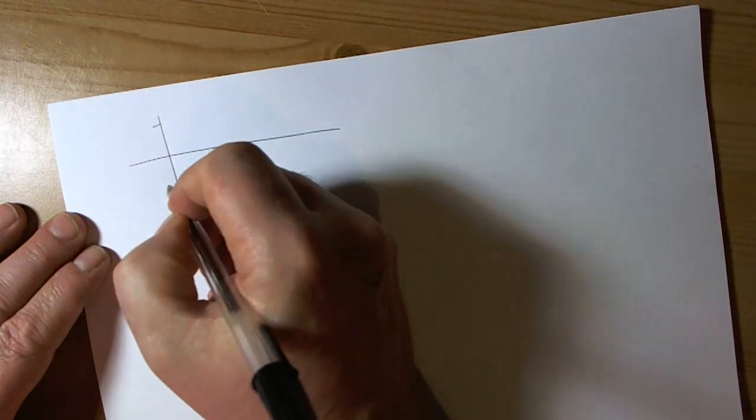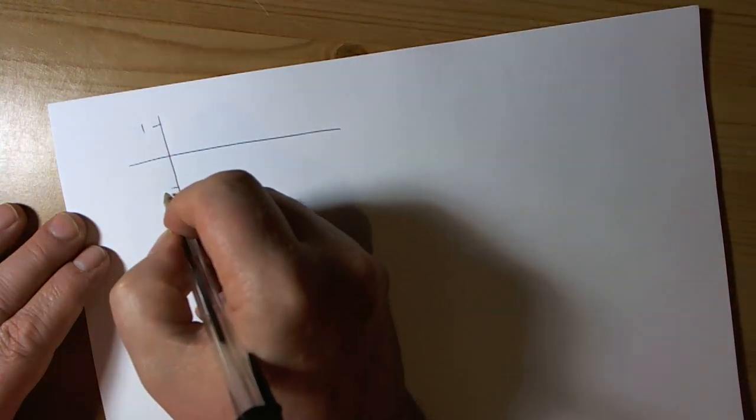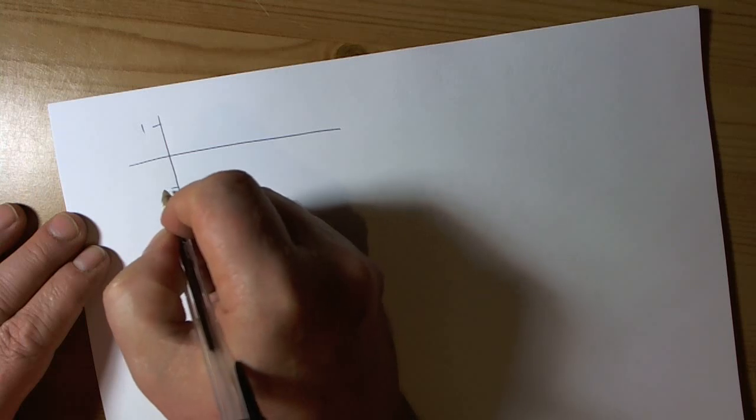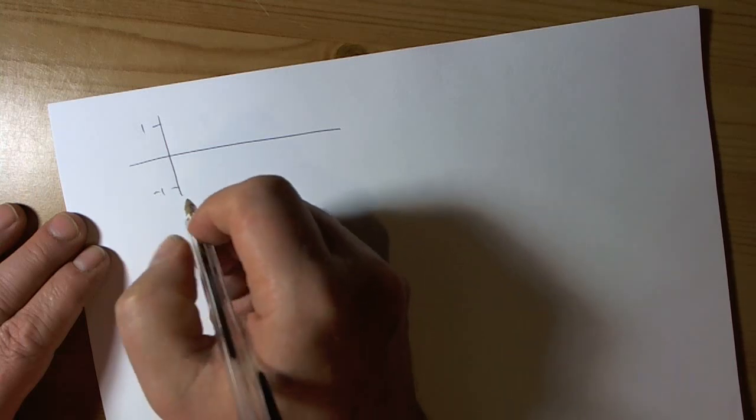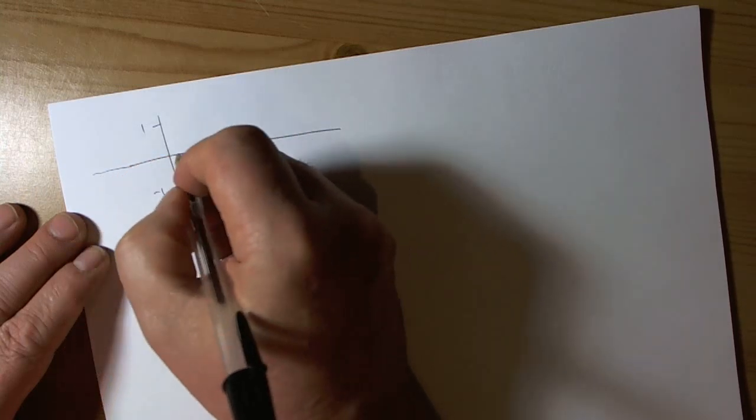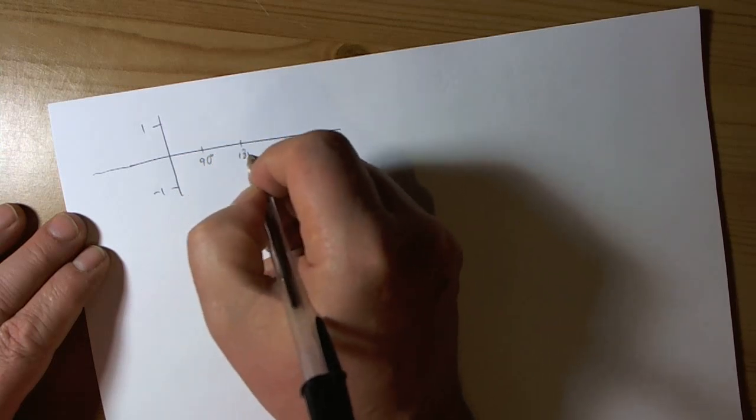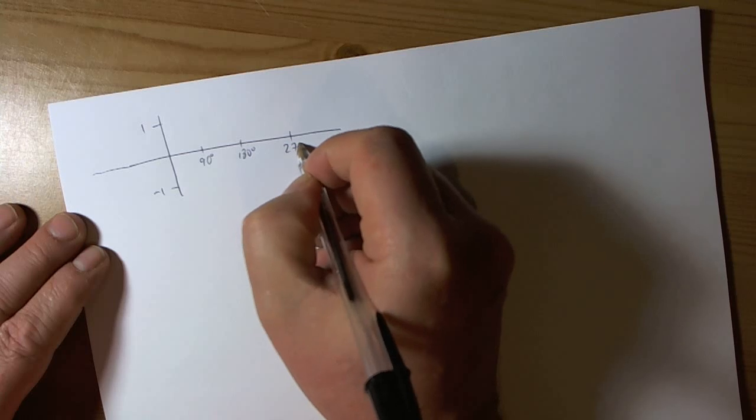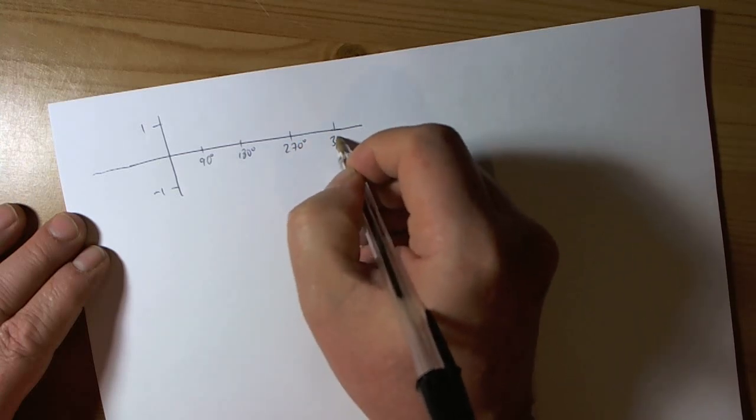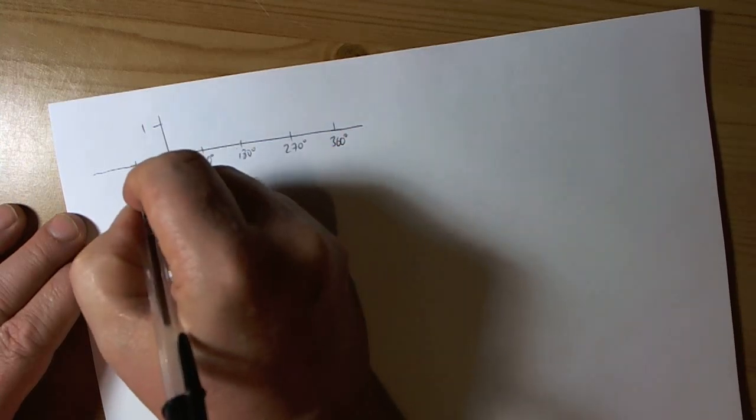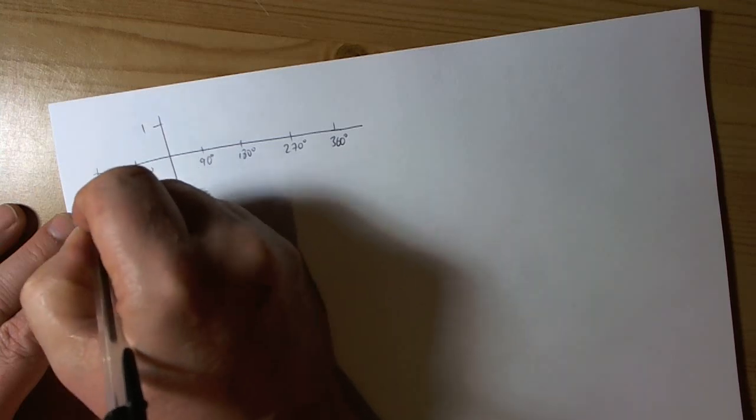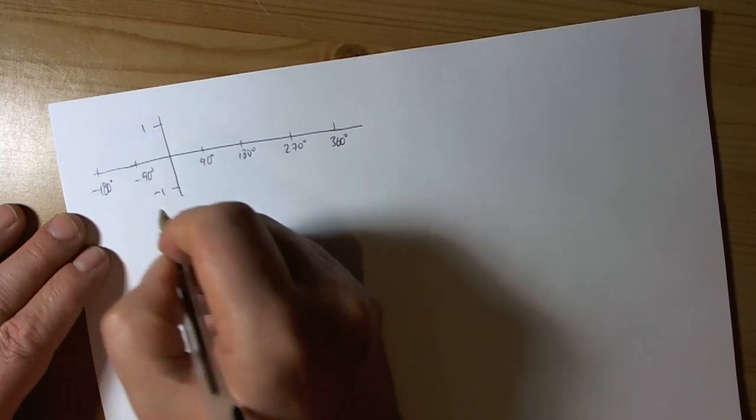So the first thing we need to remember is what the graphs of those functions look like. We recognize the general pattern that sine and cosine curves go from 1 to minus 1. And the special points we need to remember all the time are 90 degrees, 180 degrees, 270 degrees, 360 degrees and the corresponding negative values.